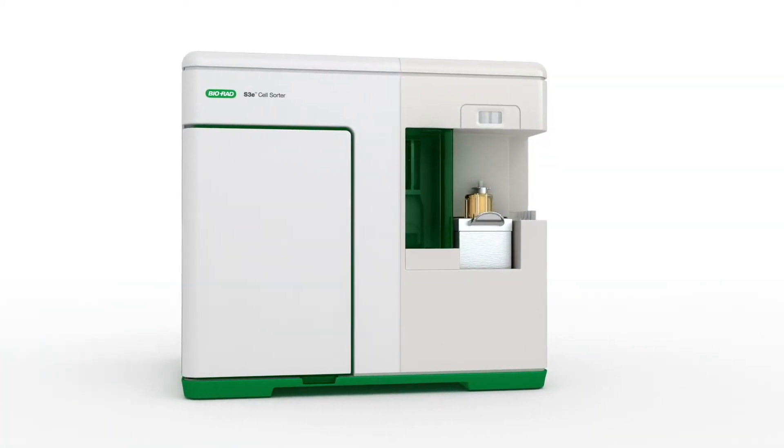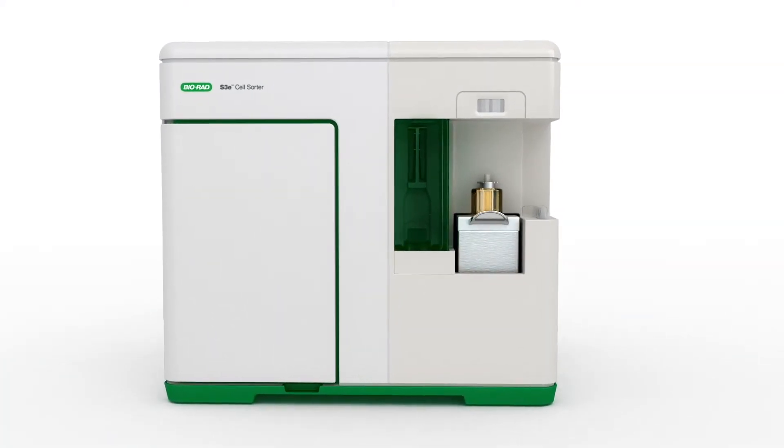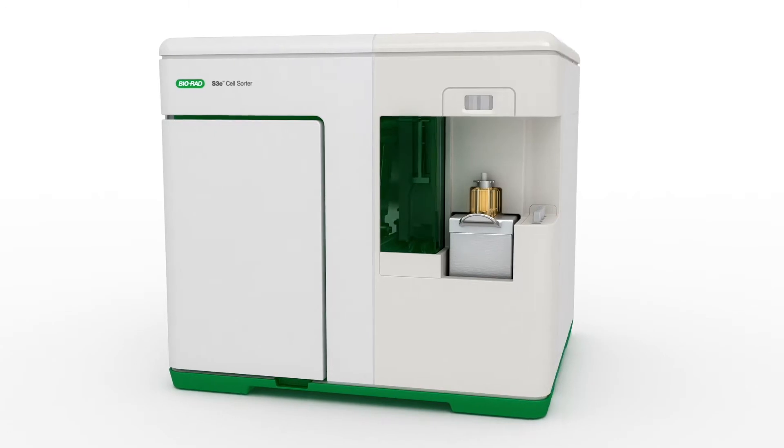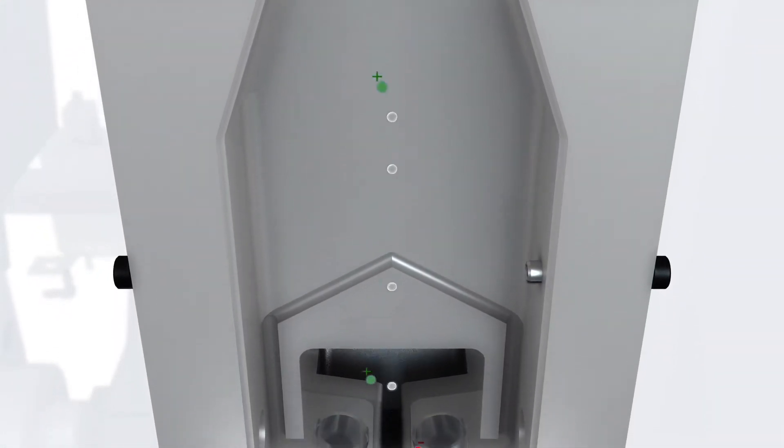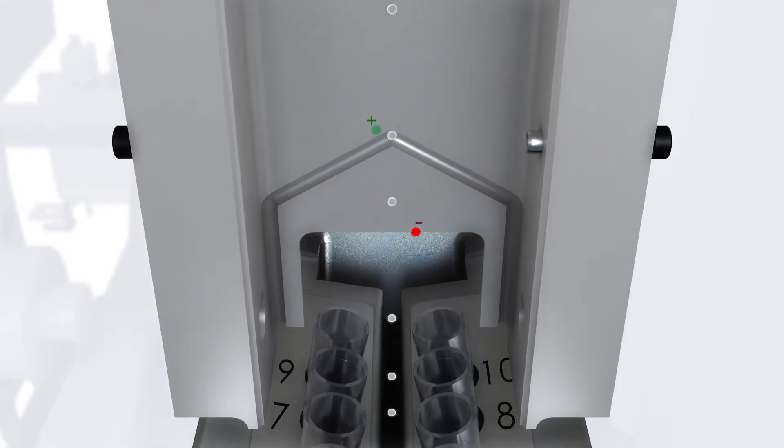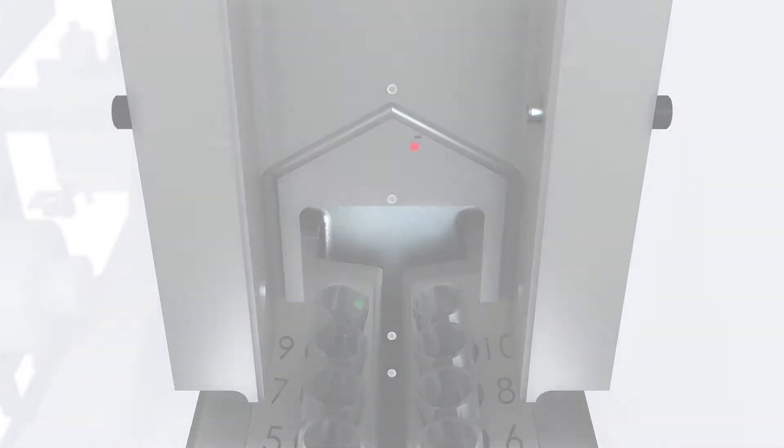Enter the S3E Cell Sorter from Bio-Rad, an easy-to-use, high-speed cell sorter that fits right on your bench. It lets you sort for intracellular and extracellular markers to give you the pure, viable cell populations needed for your research.